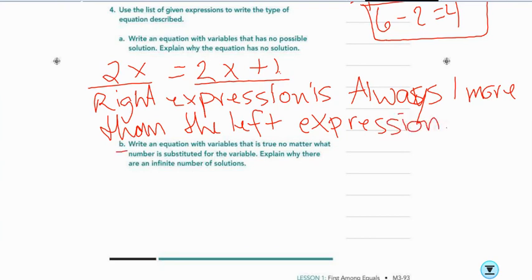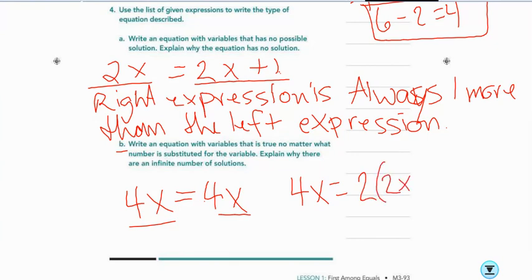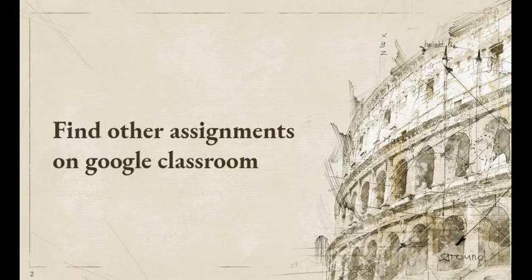B says, write an equation with variables that is true no matter what. So, I could say something like, 4x equals 4x. These are the same. And they'll always be the same. I could also say something like, 4x equals 2 times 2x. These will multiply, and this will still be 4x.